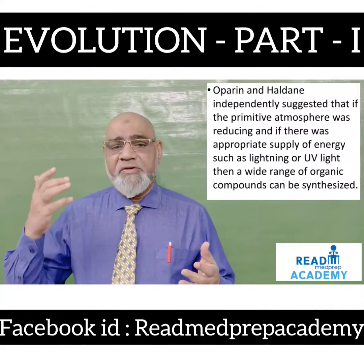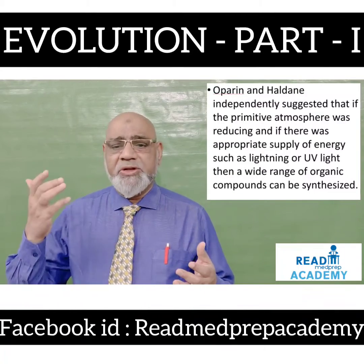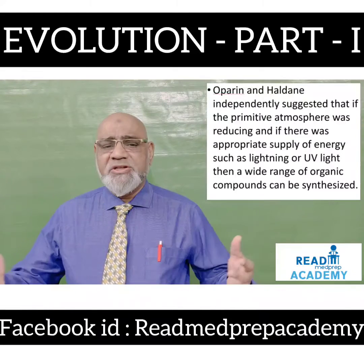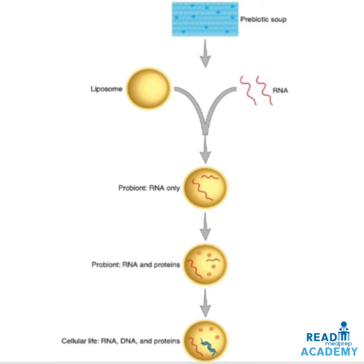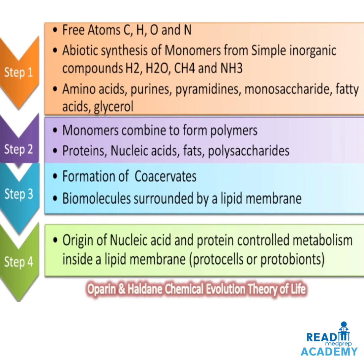Between 1924 to 1929, Oparin and Haldane independently suggested that if the primitive atmosphere was reducing and if there was an appropriate supply of energy such as lightning or UV light, then a wide range of organic compounds could be synthesized. Here in this image you can see the prebiotic soup, and the combination of liposomes and RNA resulting in the formation of a probiont, which has RNA only. The probiont slowly acquired RNA and proteins, and later cellular life developed with RNA, DNA, and proteins.